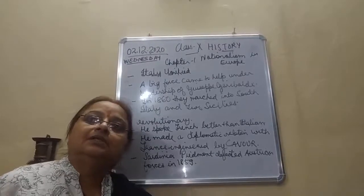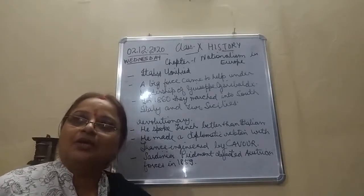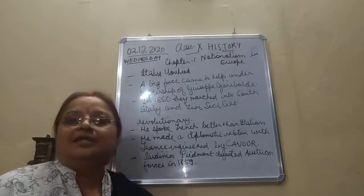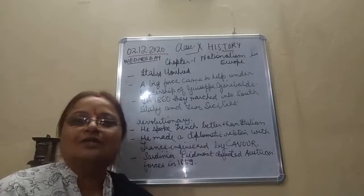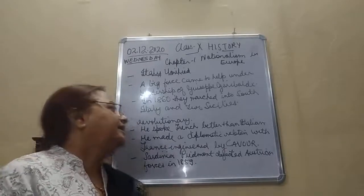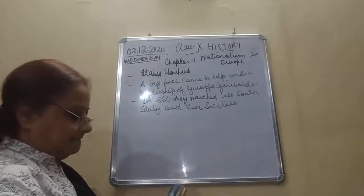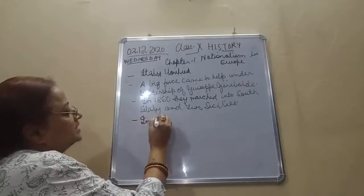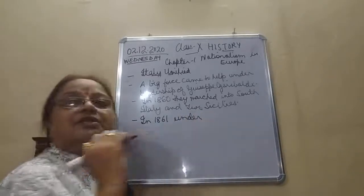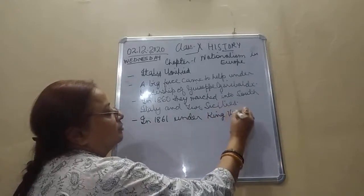The Spanish rulers were not ready to leave the Italian region and wanted their rule to continue, but in 1861 the forces had won. Final unification took place in 1861 under Victor Emmanuel II.